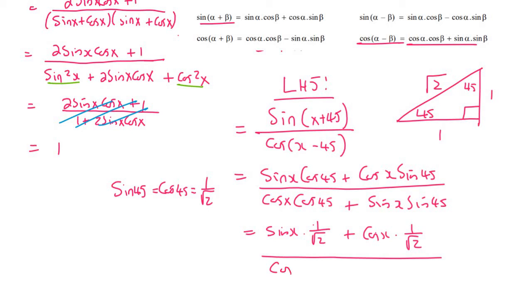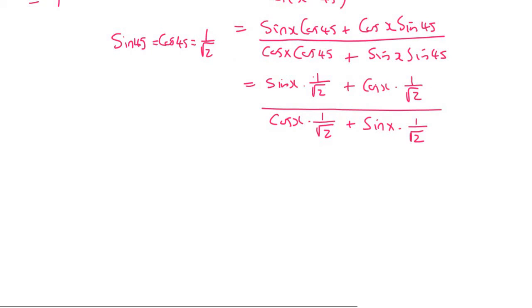And then at the bottom we'll get cos x times 1 over square root 2 plus sin x times 1 over square root 2. And then that's just going to give us 1 over square root 2 sin x plus 1 over square root 2 cos x.